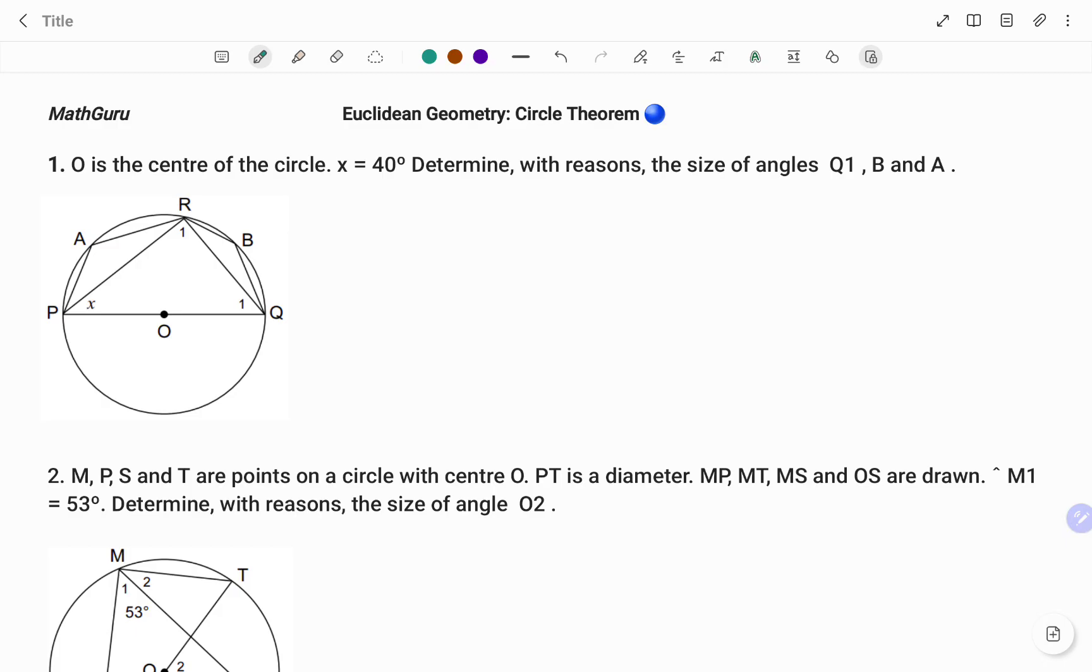In the first example, we have O is the center of the circle and the value of x equals 40 degrees. We are to determine with reasons the size of angles Q1, B, and A. Because we've been told that O is the center, you can see that the line POQ is the diameter of the circle.